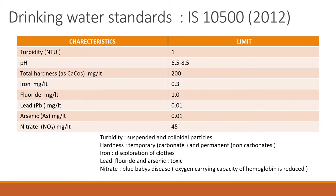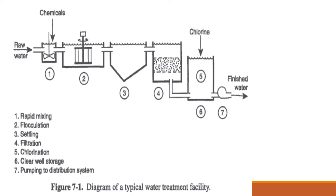Coming to water treatment, the water that comes to your houses undergoes treatment steps before reaching you. From surface water, water is sent to treatment plants where solid content and turbidity are removed using chemical steps. Chemical agents like coagulants or flocculants are added at the beginning and undergo slow mixing so that these chemicals attach to the fine particulates present in the water sample.